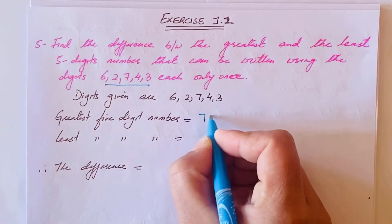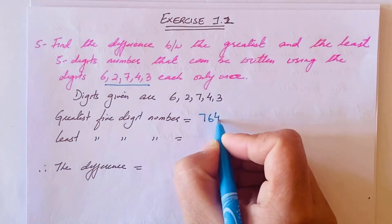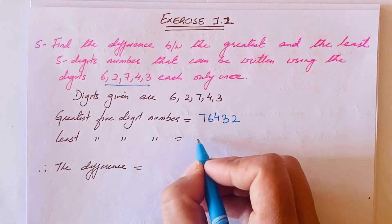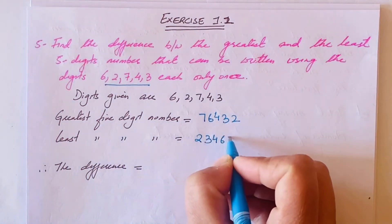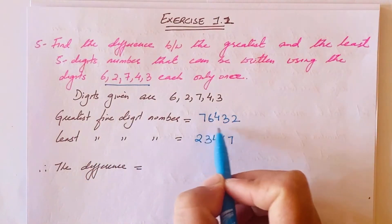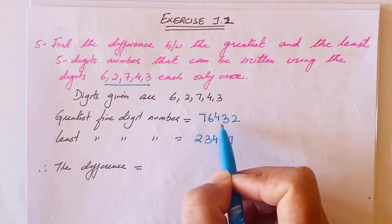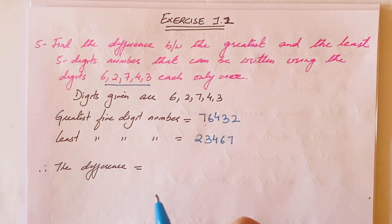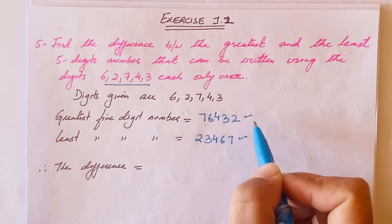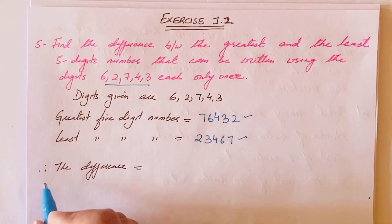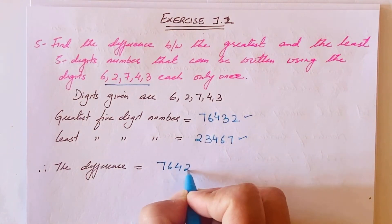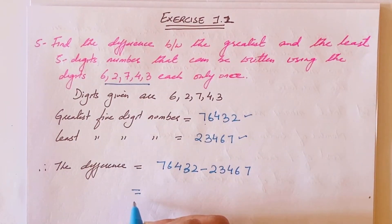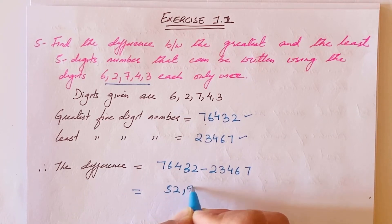The greatest number is 76,432. For the greatest number, always start from the largest digit and write in descending order. The least number is 23,467 — start from the smallest digit and write in ascending order. So the difference is 76,432 minus 23,467, which gives us 52,965.